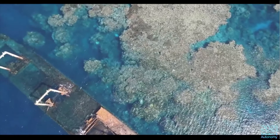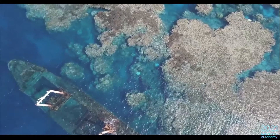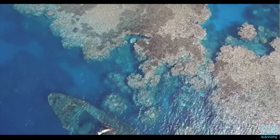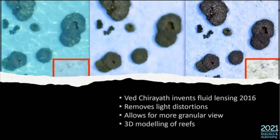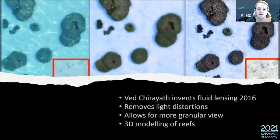Our eyes can easily pick out where there is reef and where there is not, but when using software for mapping and machine learning, those glints and waves can be an issue. We need better ways of removing these problems without causing distortion and maintaining the reef information. One of those methods is called fluid lensing — a relatively new technique invented by Abid Chaudhry in 2016.